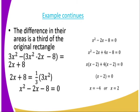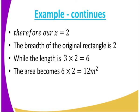When we equate the difference, we get x² − 2x − 8 = 0. Solving the equation, we get x = −4 and x = 2. Remember, this is a length, so we cannot take a negative value. So we take x = 2. Therefore, the breadth of the original rectangle is 2, while the length is 6. So the area becomes 6 × 2 = 12 meters squared.